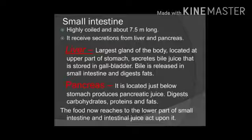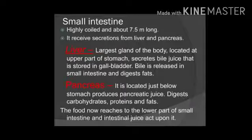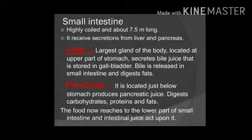The small intestine is a highly coiled muscular tube and its length is 7.5 metres — it is the longest part of the alimentary canal. Further digestion takes place here with the help of two glands: the liver and the pancreas. The liver is the largest gland of the body and is reddish-brown in colour. It secretes bile, which is stored in the gallbladder and then released into the small intestine, where it digests fat. The pancreas is located just below the stomach and produces pancreatic juice, which digests carbohydrates, proteins, and fats.